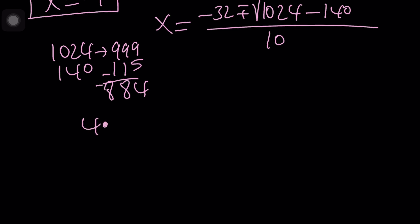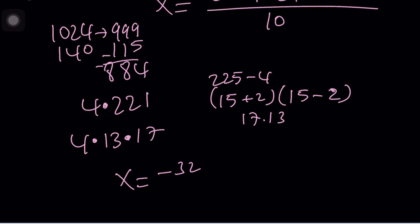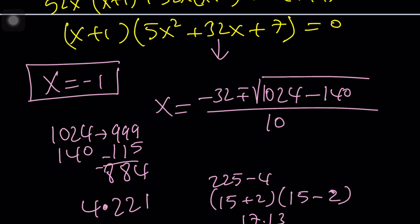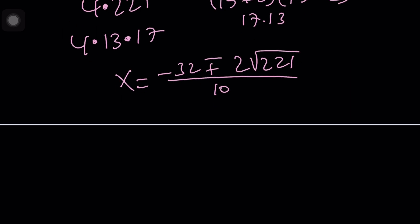It's 4 times 221. And 221, it's not a prime because it's the difference of two perfect squares, which can be factored. This would be 17 times 13. I knew that was a product of two primes. So only 4 is going to come out. So x is going to be something like negative 32 plus minus 2 times the square root of 221 divided by 10. I think everything is divisible by 2. Negative 16 plus minus square root of 221 divided by 5. Those should be the other solutions. Since this is a cubic, there should be three solutions.